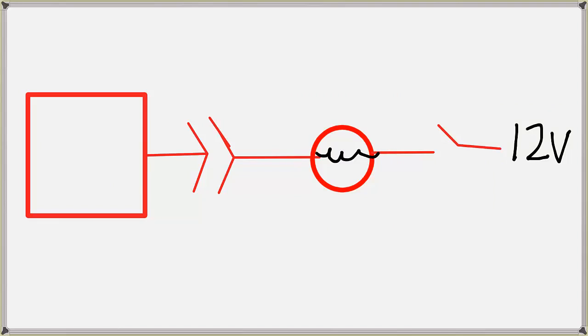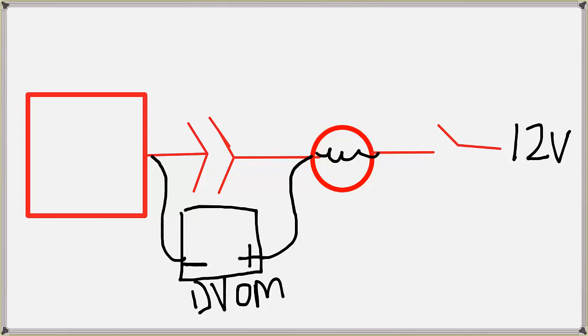So here's the question. This is my voltmeter. My positive lead, my negative lead, and one lead goes here and another lead goes there.